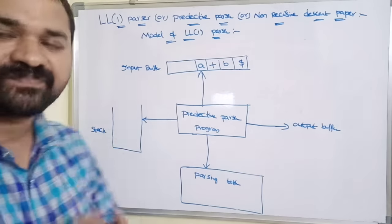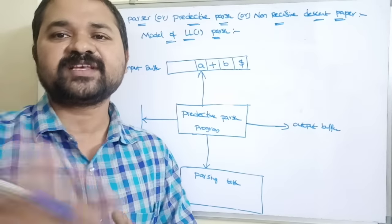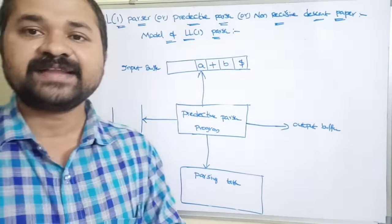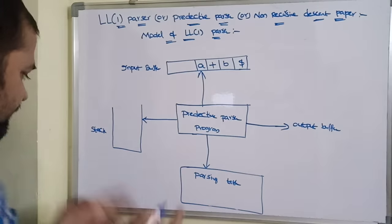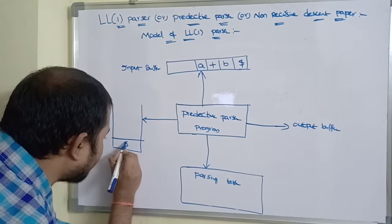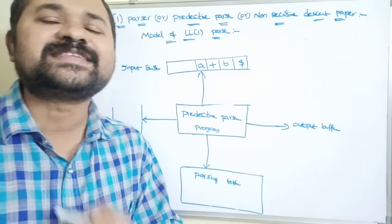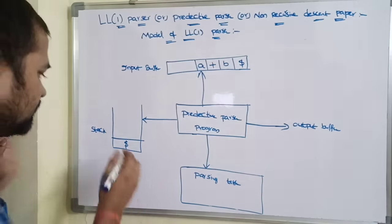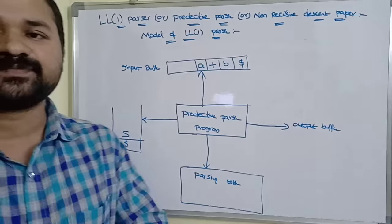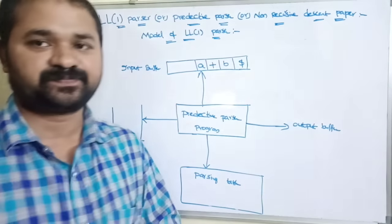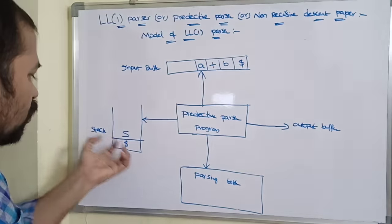Stack is a data structure which works on the principle of LIFO — last in first out. We can perform two operations on the stack: push means inserting an item, and pop means deleting an item. Initially, dollar is stored at the bottom of the stack. Thereafter, the starting symbol of the grammar is pushed onto the stack. The stack contains grammar symbols — either non-terminals or terminals.